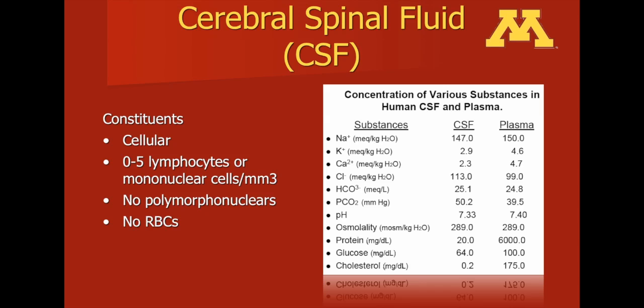The slide on the right depicts the contents of cerebrospinal fluid. It's important to recognize that cerebrospinal fluid, for the most part, is very similar to normal plasma, as can be seen by the content of sodium, potassium, calcium, and chloride. However, it is significantly different in the amount of protein and glucose found within cerebrospinal fluid.